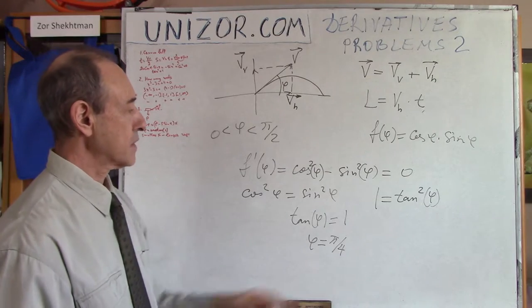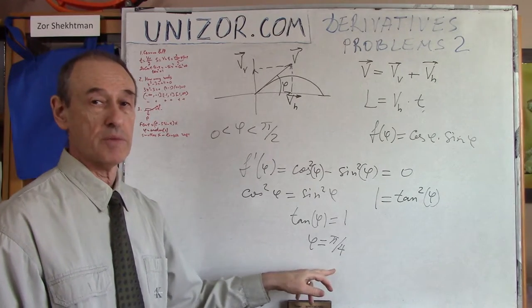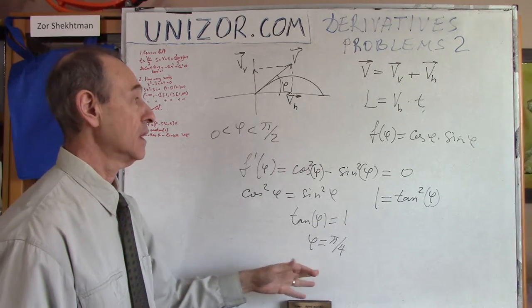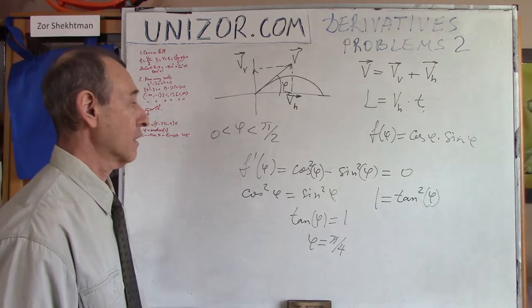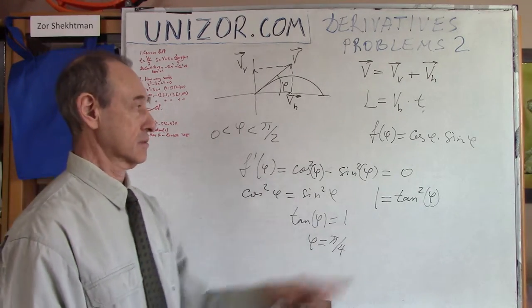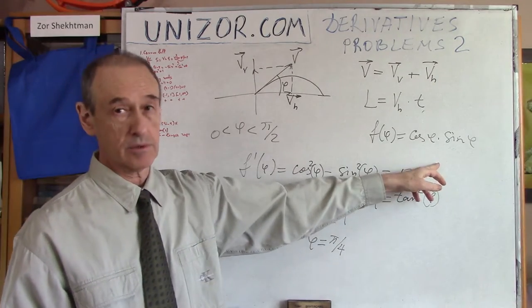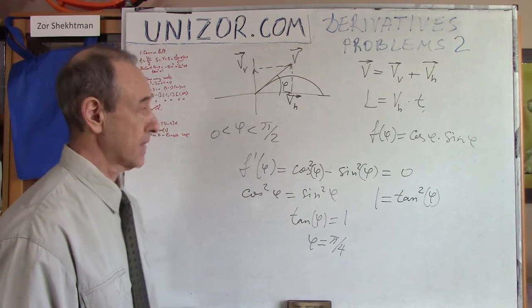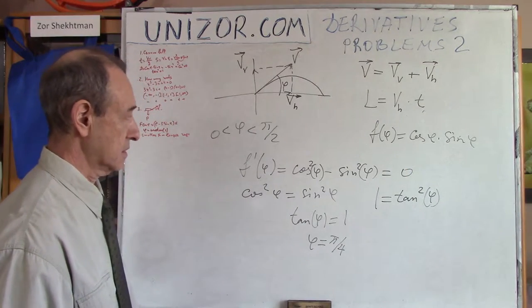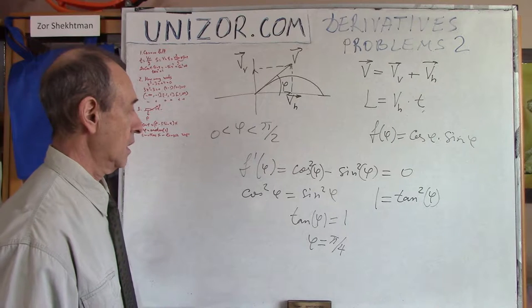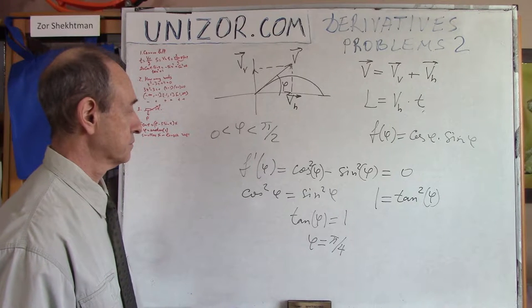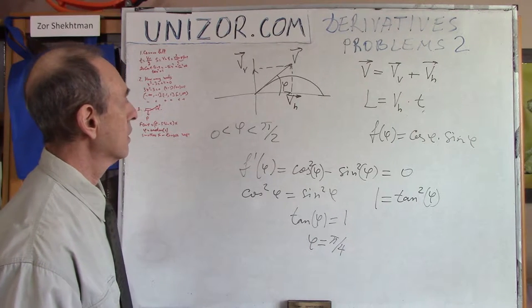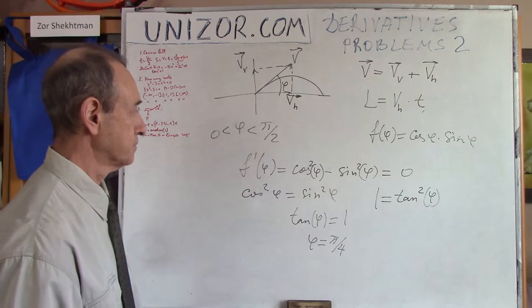We got the same result using the straightforward approach of taking a derivative and equating it with zero. To verify it is truly a maximum and not a minimum, we can take the second derivative and confirm it is negative at this point. That's it for the first problem.